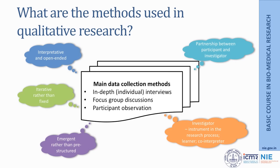The various methods used in qualitative research are a little different from those in quantitative research. In qualitative research, the methods are more interpretative and open-ended, more iterative rather than fixed. The methodology emerges as the research goes on rather than using a pre-structured format. Qualitative research becomes a partnership between participants and investigators, where the investigator becomes an instrument in the research process and acts as a co-interpreter. The main methods include in-depth interviews, focus group discussions, and participant observations.